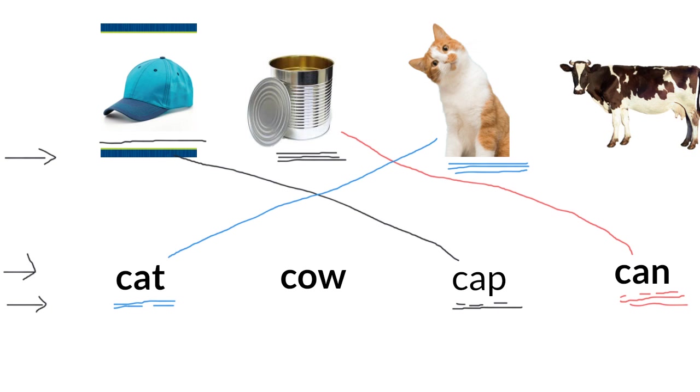And the last picture. Cow. Cow. Can you find the cow word? Yes. Cow. Cow. So you match the picture with the word. Well done.